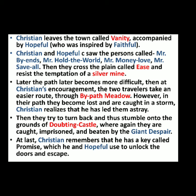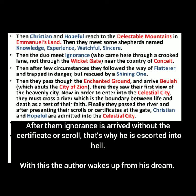At last, Christian remembers that he has a key called Promise, which he and Hopeful use to unlock the doors of the prison and escape. They then reach the Delectable Mountains just outside the Celestial City. Before entering, they must cross a river as a test of their faith. After crossing the river, they present their respective scrolls and are admitted into the Celestial City. After them comes Ignorance, but because he has no scroll or certificate, he is escorted away. With this, John Bunyan awakes from his dream, ending Part One.